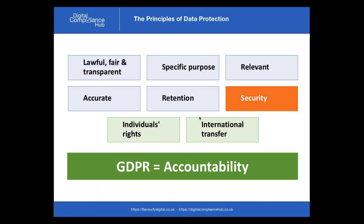In terms of the rules around data protection, there's the concept of principles. The Data Protection Act has eight principles, while the GDPR talks about six — covering that processing must be lawful, fair, and transparent; that data is only used for the specific purpose it was collected for; that it's the data you need for that purpose; that it's kept up to date and accurate; that you only retain it for as long as necessary; and that all processing must be done securely.